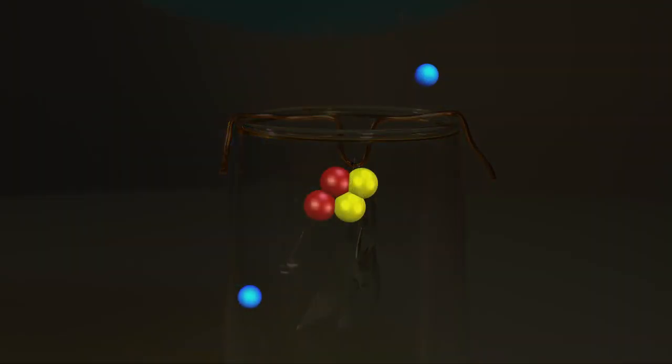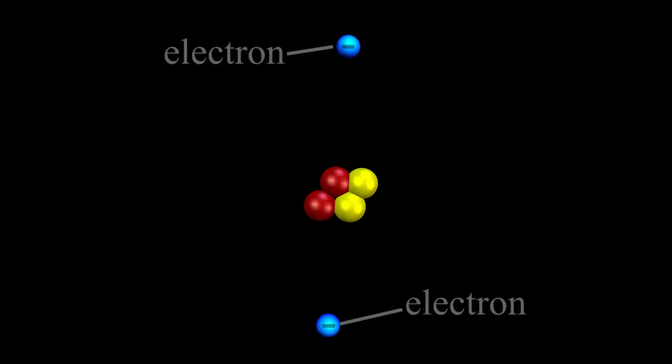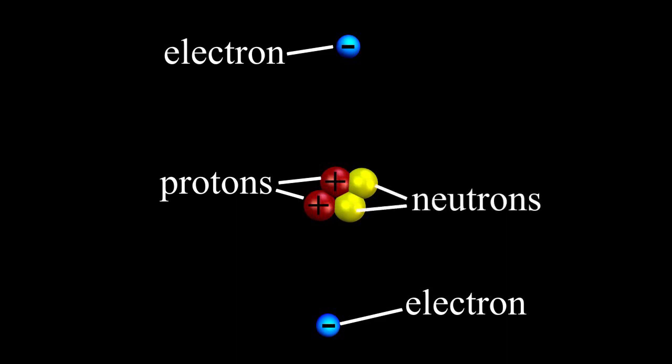You may know that the atom has three basic components. Negatively charged electrons, positively charged protons, and neutrons, which carry no charge.